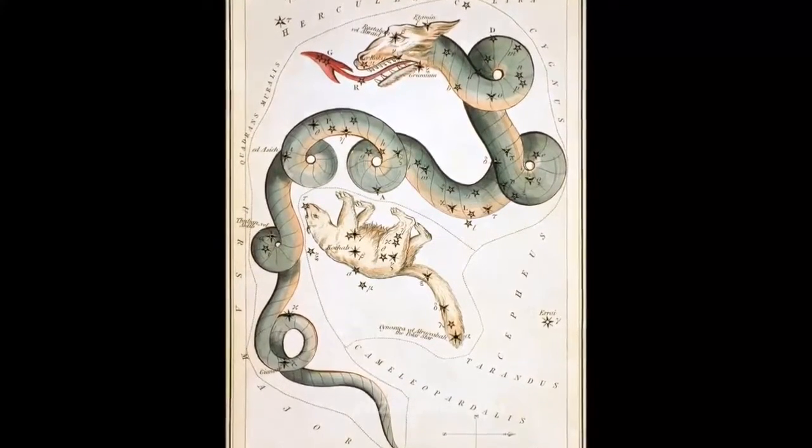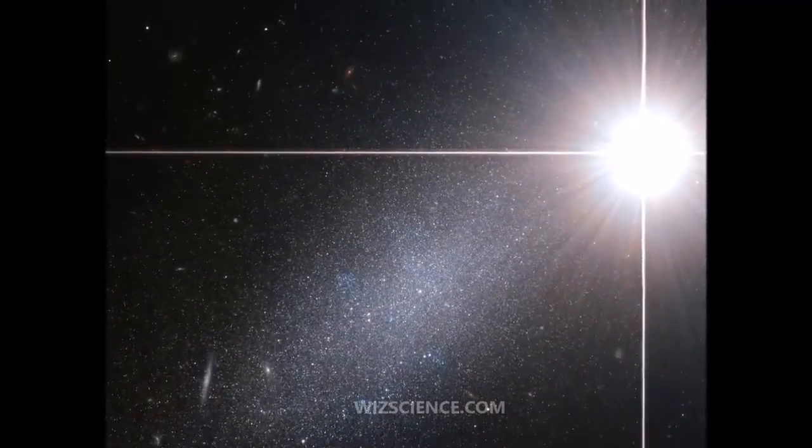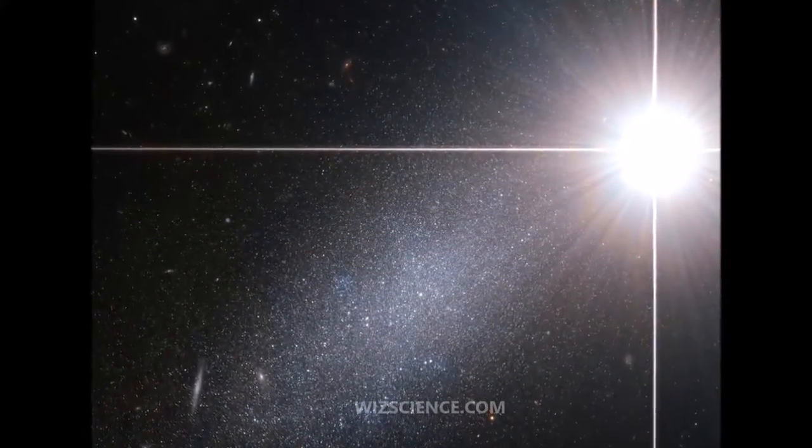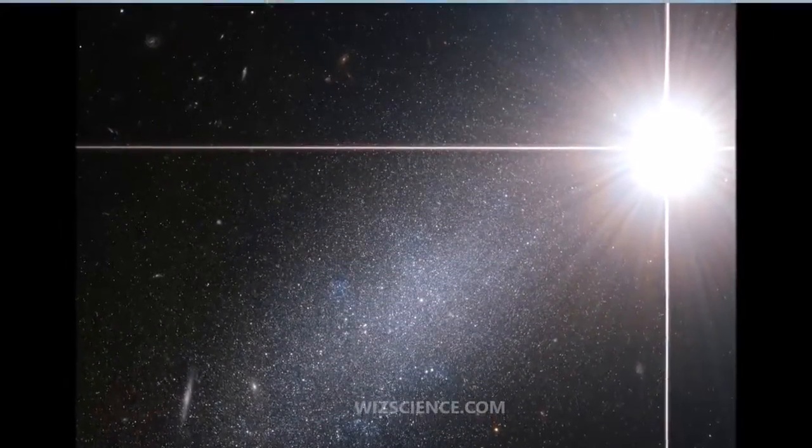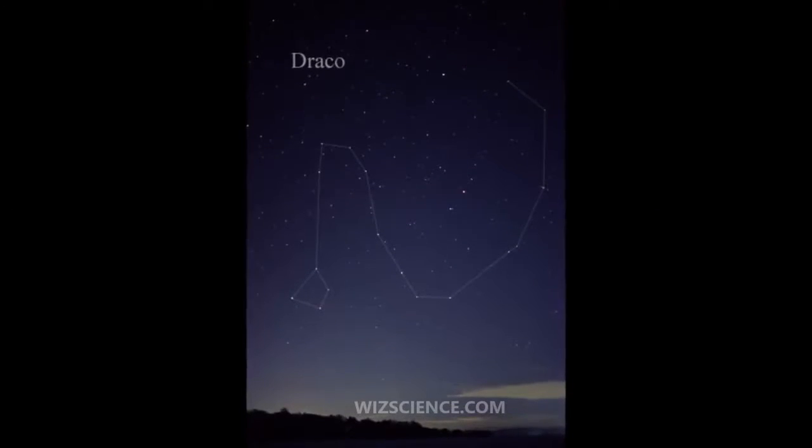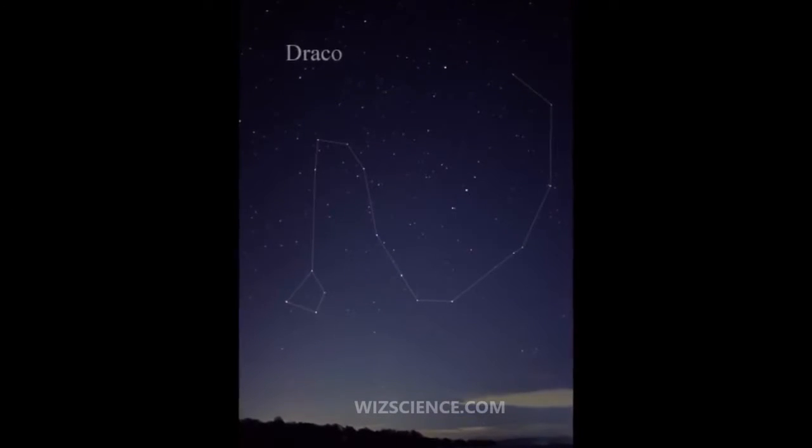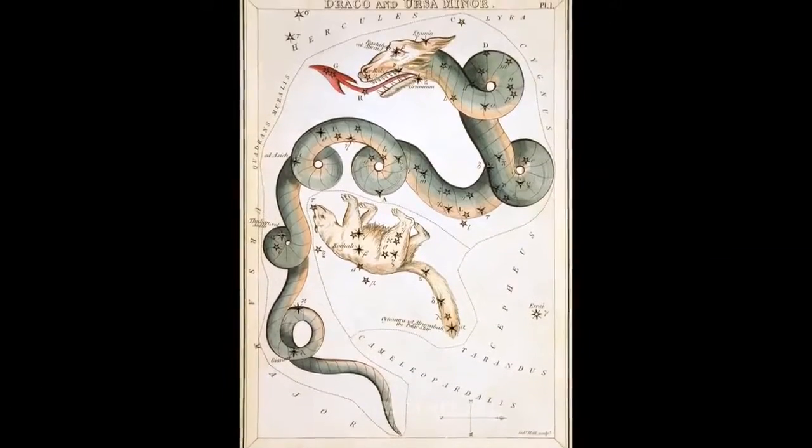Psi Draconis is a binary star divisible in binoculars and small amateur telescopes, 72 light-years from Earth. The primary is a yellow-white star of magnitude 4.6 and the secondary is a yellow star of magnitude 5.8.